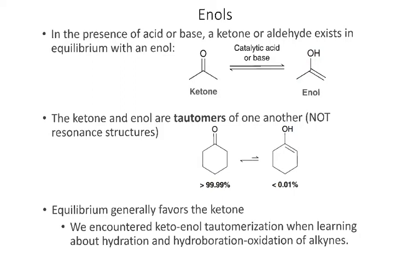The process of converting back and forth between the ketone and the enol is an isomerization with a special name: tautomerization. We would say the ketone and the enol are tautomers of one another.